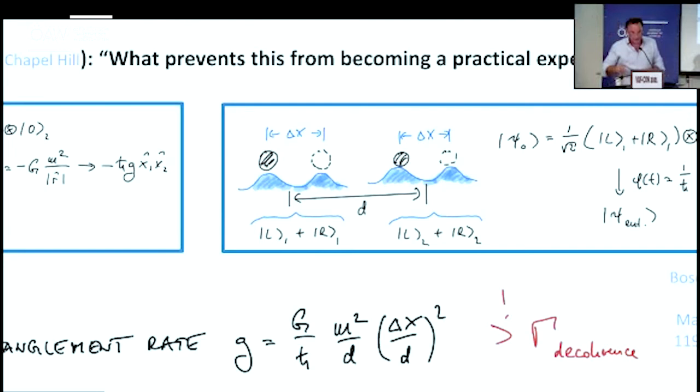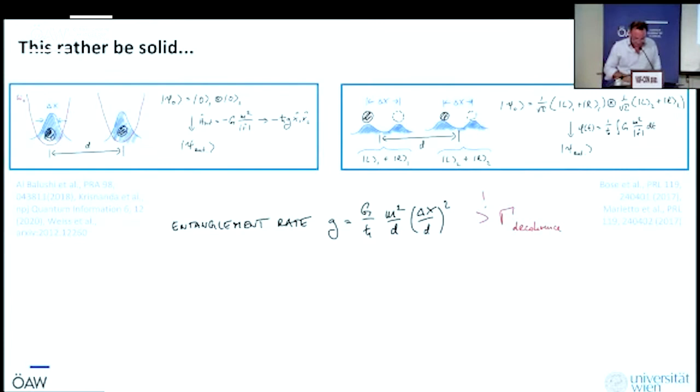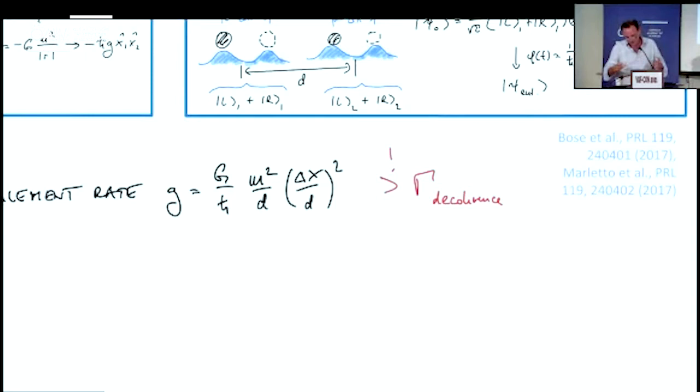Here's our rate that we just derived. This has to be larger than the decoherence rate in order to do something meaningful. Let's say we are really good experimentalists, so we say this is on the order of one, so a second. We're so good experimenters, we can do a quantum experiment on a scale of a second. That's already pushing it. Let's also assume that our D, the distance between the two, is somewhere, let's say a micrometer, 10 to the minus six meter. Let's also assume that our delta x over D, the delocalization, the relative delocalization relative to the distance that I have, is on the order of 10 to the minus one. I can delocalize by like a hundred nanometers.